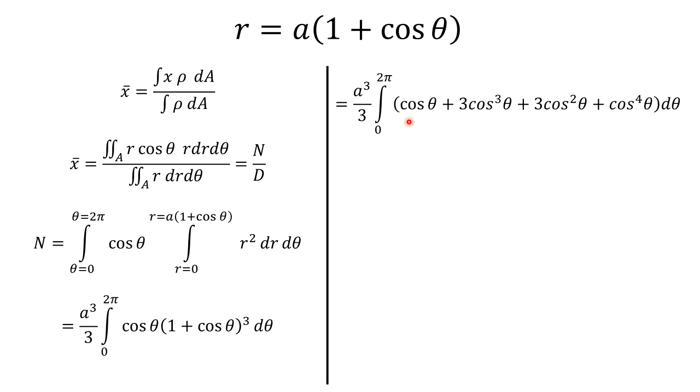Now here, as these limits are from 0 to 2 pi, we know that integration 0 to 2 pi of cos raised to n theta d theta will be 0 if n is odd, and it is equal to 4 times integration 0 to pi by 2 cos raised to n theta d theta if n is even. So therefore in this case, the first term and second term will become 0, and we will get this: a cubed by 3, so because this cos square theta is even, so we'll get 4 times 3, that is 12, integration from 0 to pi by 2 cos square theta d theta.